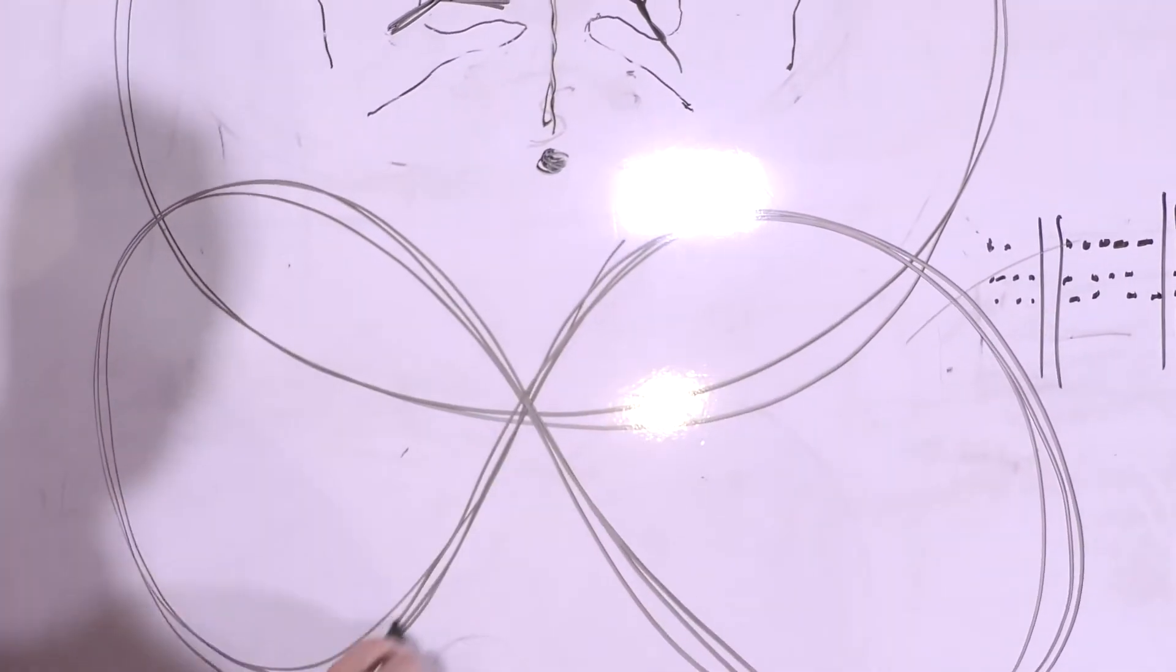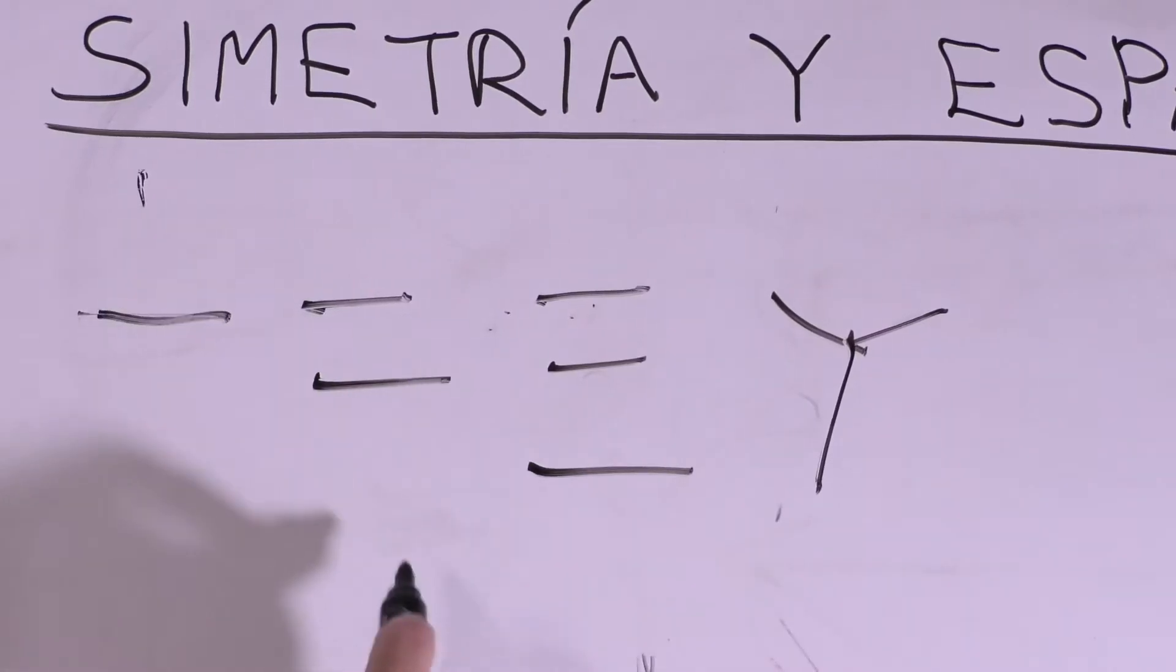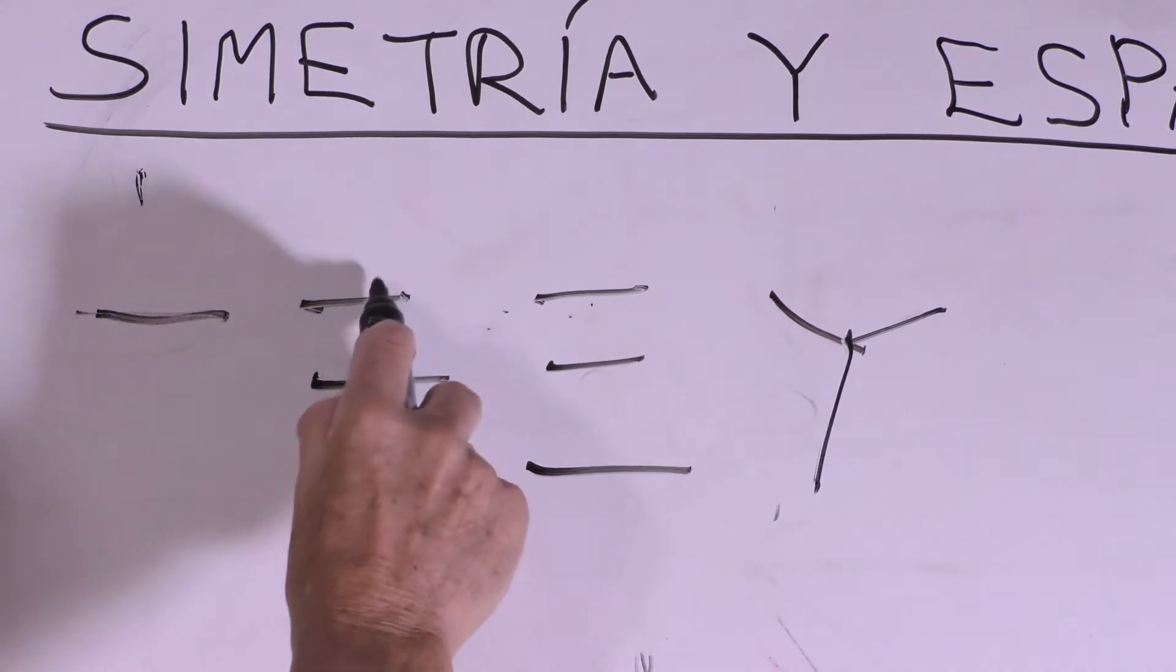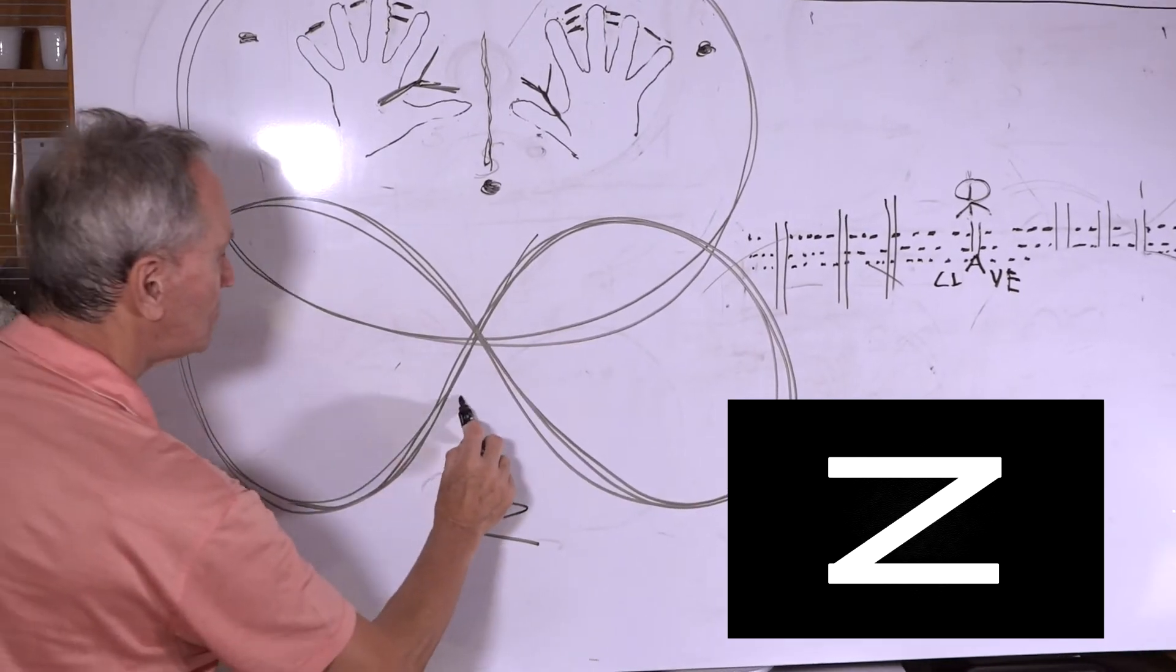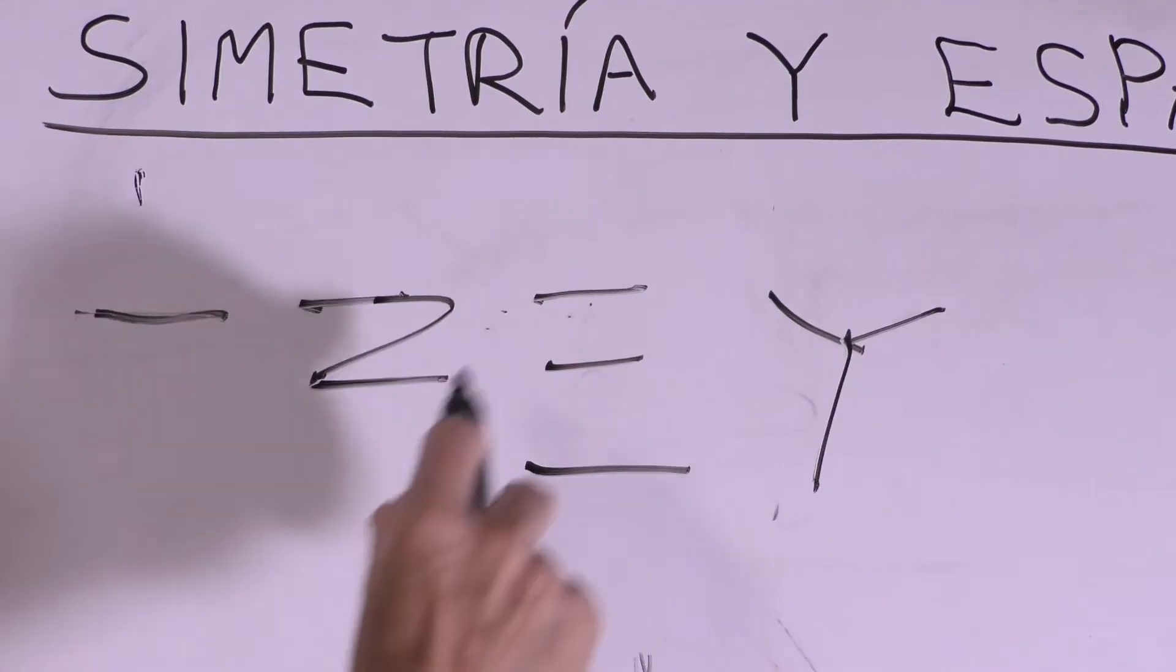But when he tried to draw the two horizontal lines fast and without lifting the instrument from the soil, the figure of today's number two appeared. The same thing happened with number three.